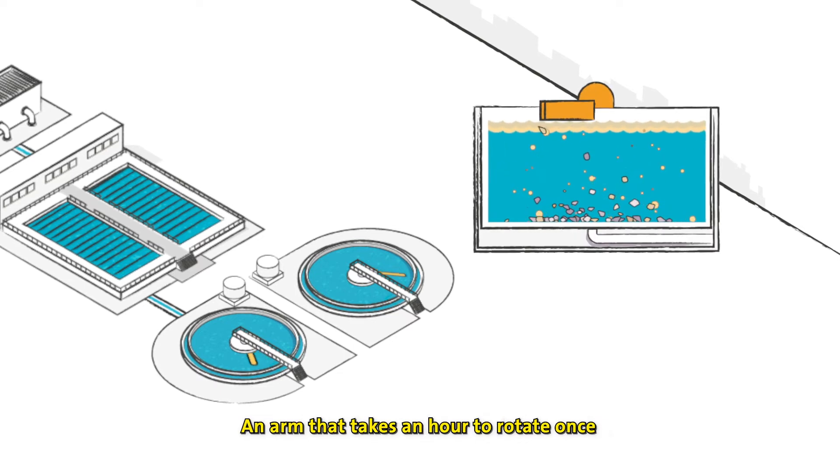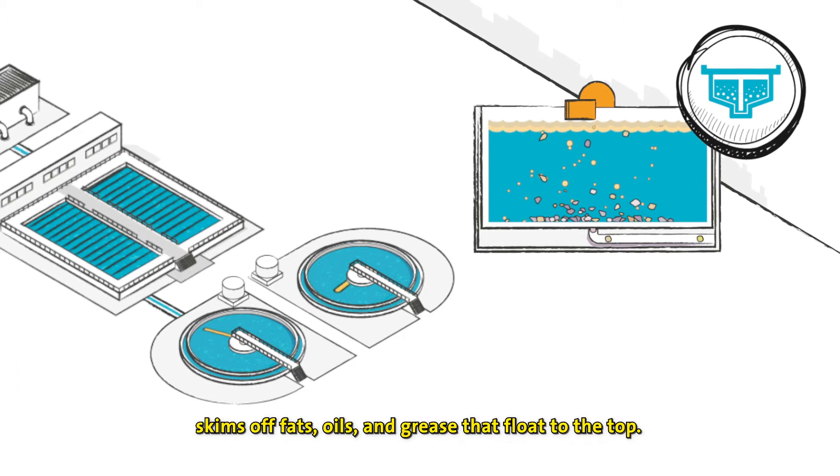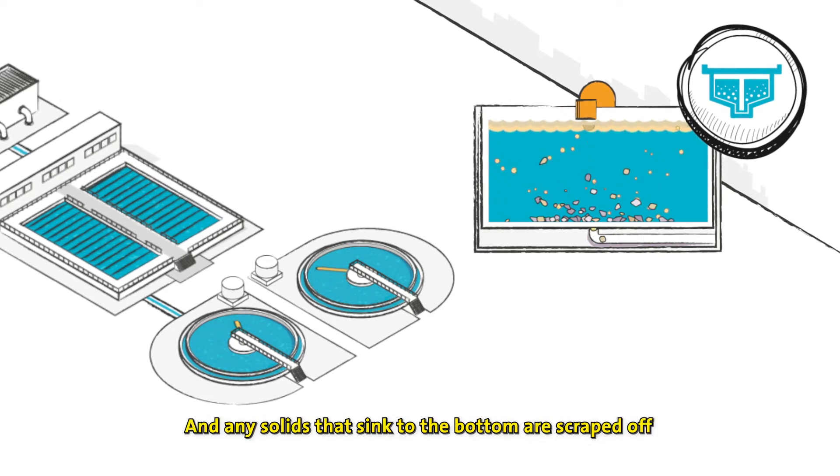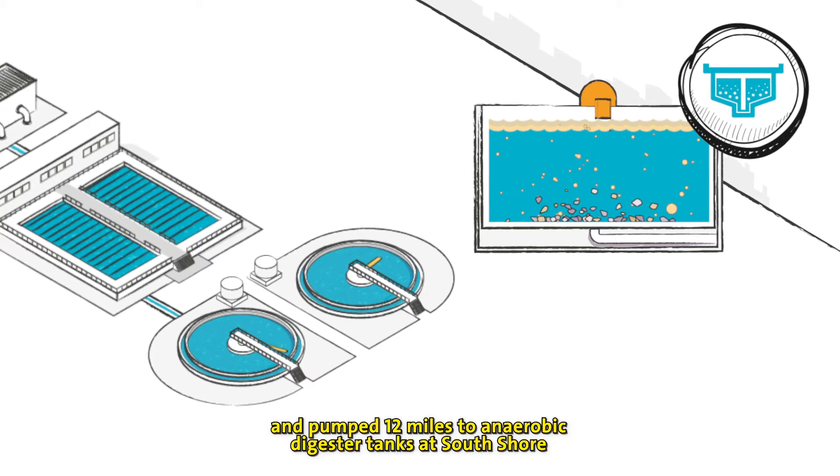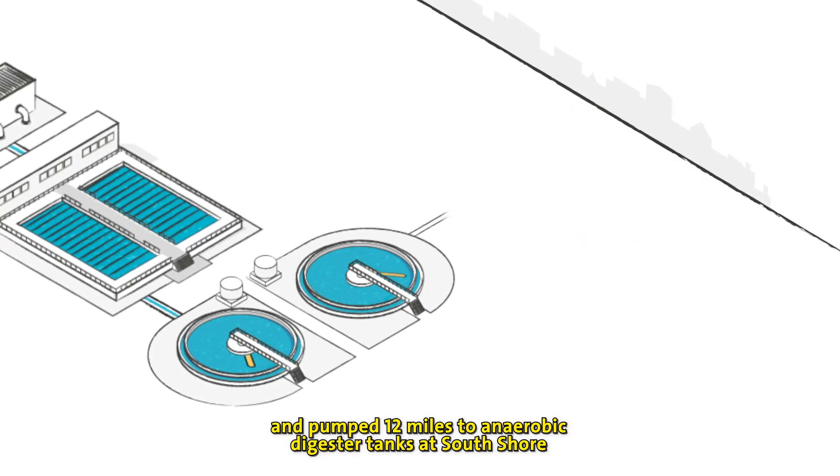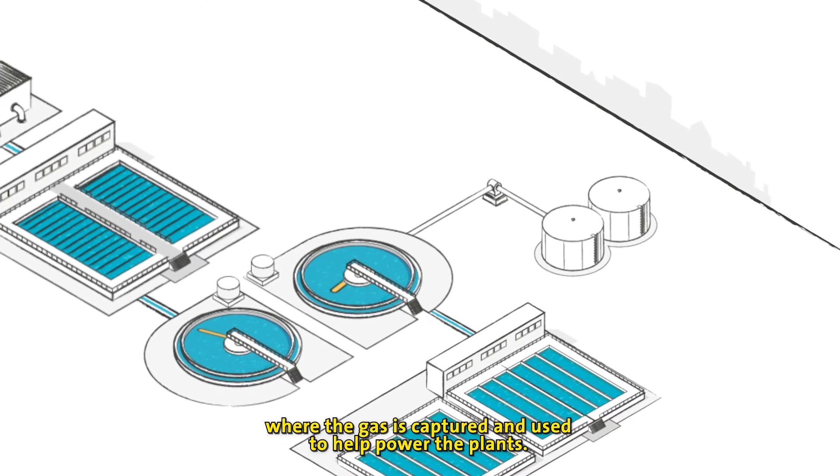An arm that takes an hour to rotate once skims off fats, oils and grease that float to the top, and any solids that sink to the bottom are scraped off and pumped 12 miles to anaerobic digester tanks at South Shore, where the gas is captured and used to help power the plants.